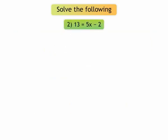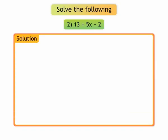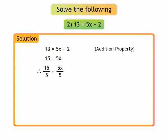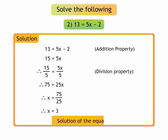2. 13 is equal to 5x minus 2. Let us simplify the equation using addition property. We get 15 is equal to 5x. Using division property, we get 15 upon 5 is equal to 5x upon 5. Therefore, x is equal to 3. The solution of the equation is 3.